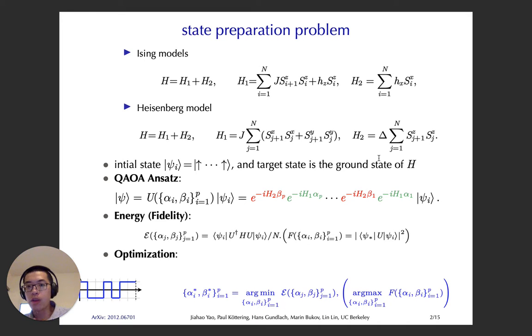Here are several physics examples in the state transfer problem, say the Ising models and the Heisenberg models. The initial states usually are the ones that are easy to prepare, say the all-up states, and the target state will be the ground state for the target Hamiltonian you care about. The QAOA ansatz here is alternating between H1 and H2. The quantity we care about is the energy or fidelity. The energy will be the expectation energy averaged by N, and the fidelity is the overlap between the target state and the evolved state. The optimization is basically minimize the energy or maximize the fidelity.